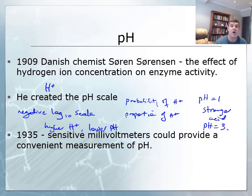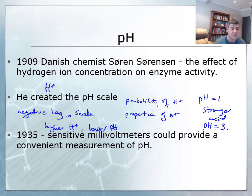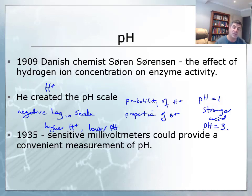It took a little while for us to be able to measure, or at least to build technology sufficient for us to conveniently measure pH. In the 1930s, scientists were able to develop sensitive millivolt meters which were able to use electrochemical means to measure pH. So we had this pH scale.